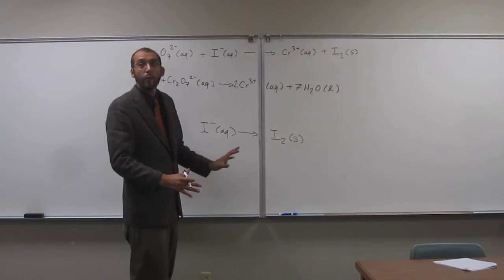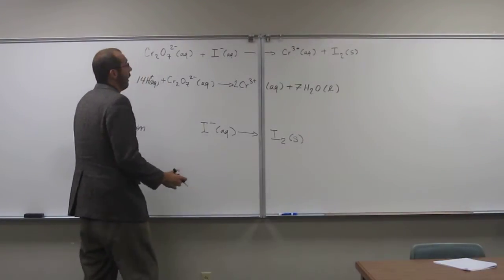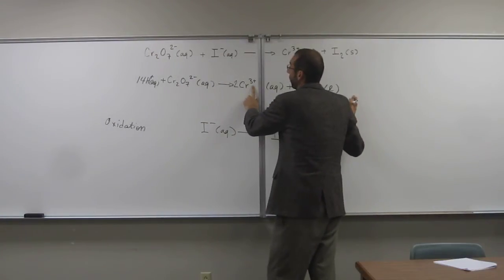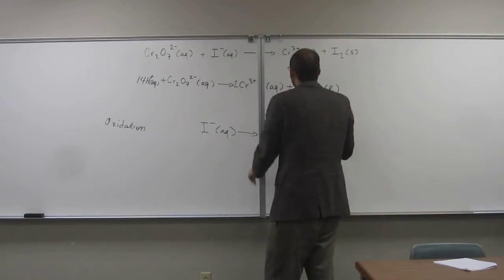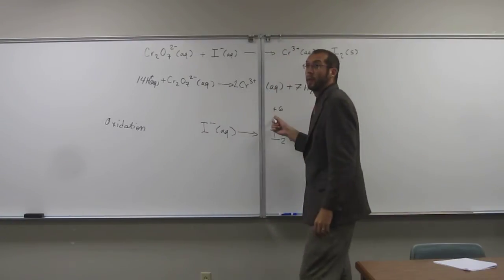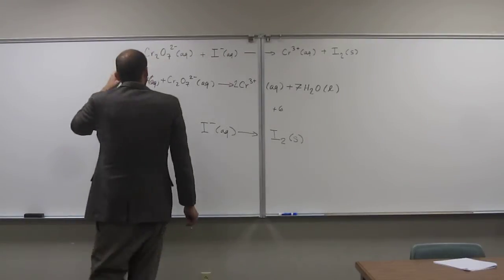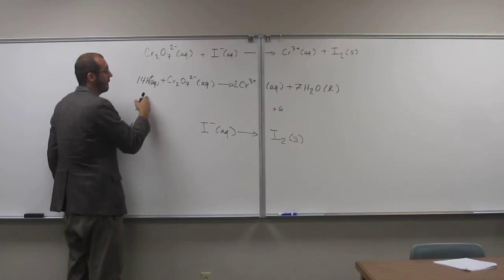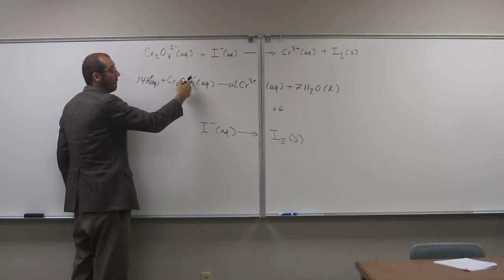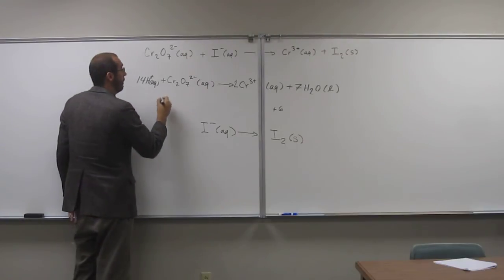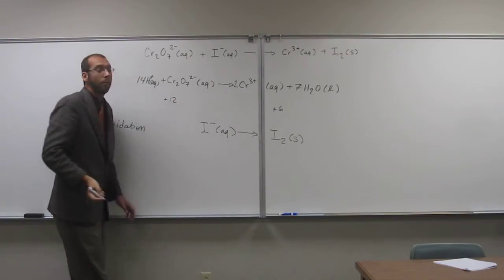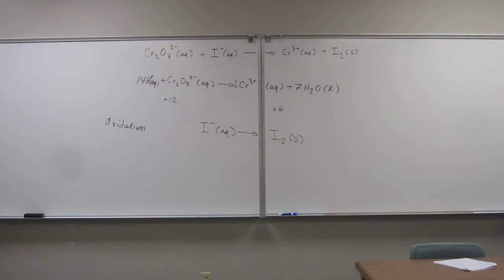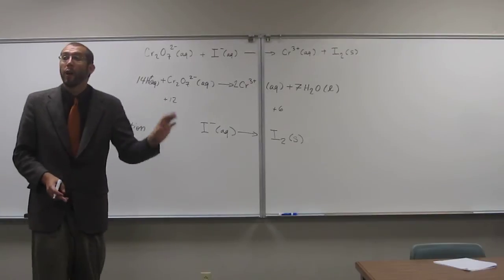So now we want to think about the charge differential. So on this side, you see we've got plus three times two. So overall this side has a plus six. Over here I see, I've got one times 14. So that's plus 14 minus two. So that would be twelve. And remember, whenever you're doing this charge balancing, you can only add electrons. So electrons are negatively charged.